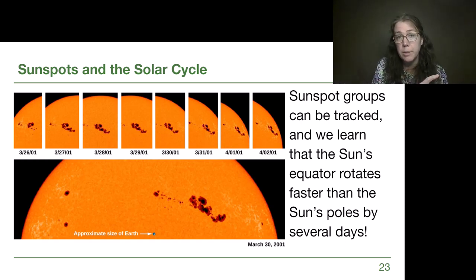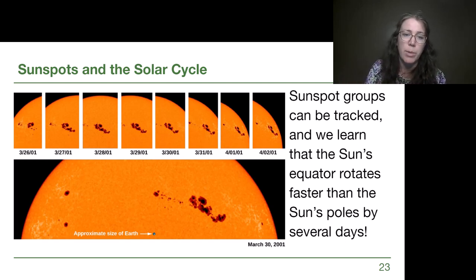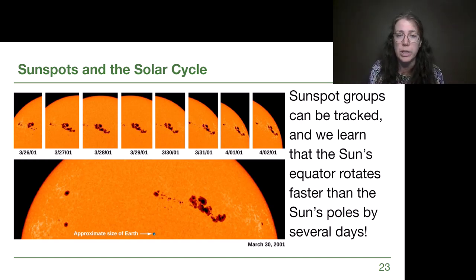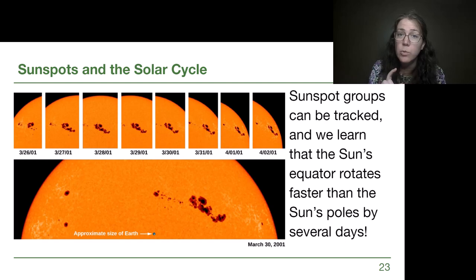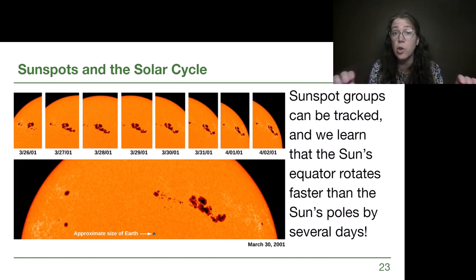Sunspot groups can be tracked — Galileo did this in the 1600s. We can watch them evolve over time. Looking at about a week's worth of data, the sunspots move around a little bit, showing constant motion and how quickly they move across the surface. What we find as astronomers is that sunspots actually move much faster near the equator of the sun than farther away.